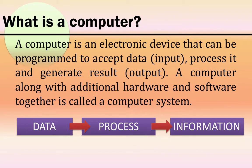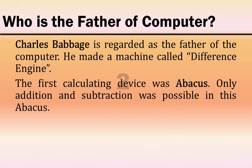What is a computer? A computer is an electronic device that can be programmed to accept data that is input, process it, and generate a result that is output. A computer along with additional hardware and software together is called a computer system.